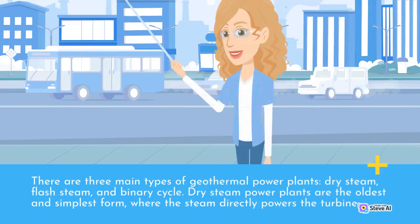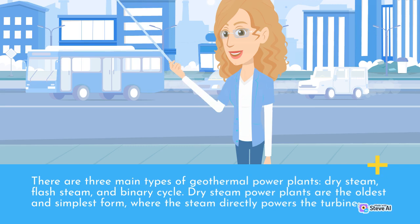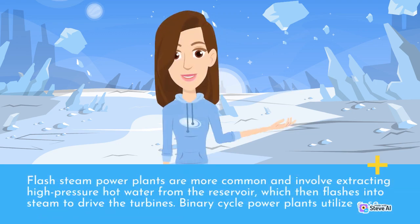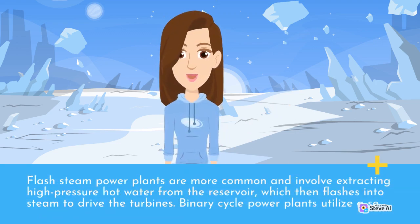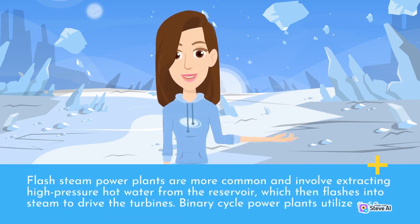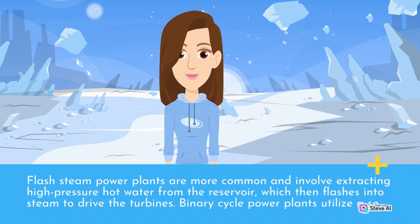There are three main types of geothermal power plants: dry steam, flash steam, and binary cycle. Dry steam power plants are the oldest and simplest form, where the steam directly powers the turbine. Flash steam power plants are more common and involve extracting high-pressure hot water from the reservoir, which then flashes into steam to drive the turbines.